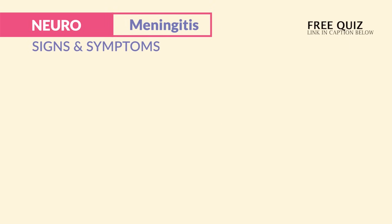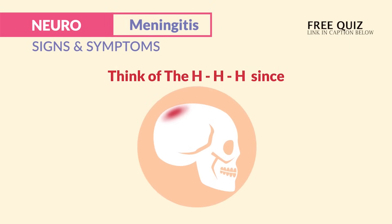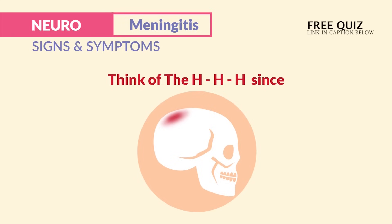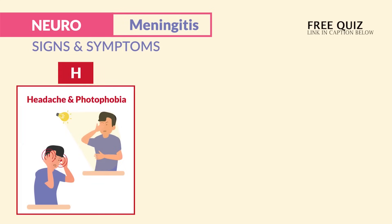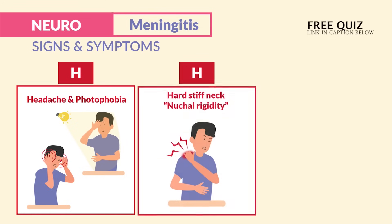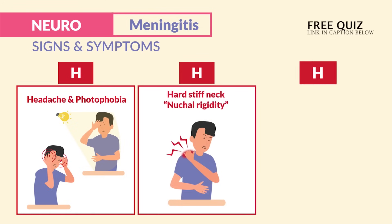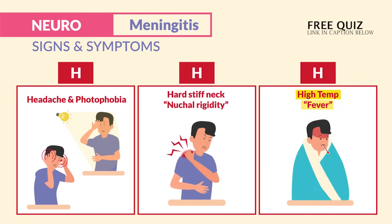The key signs and symptoms to look for — think of the three H's, since it affects pressures inside the head. H for headache and photophobia. H for hard neck, known as nuchal rigidity. And H for high temperature — we typically see a high fever due to the infection.